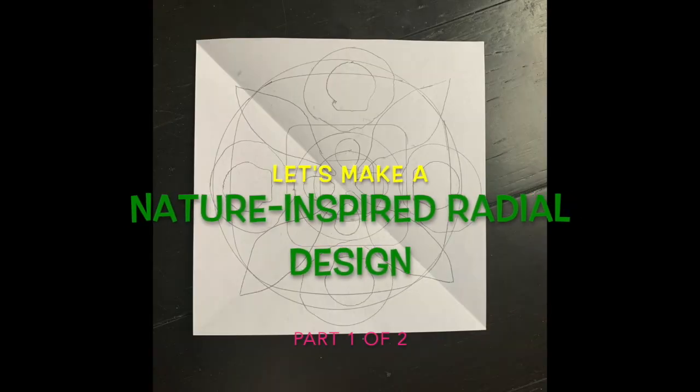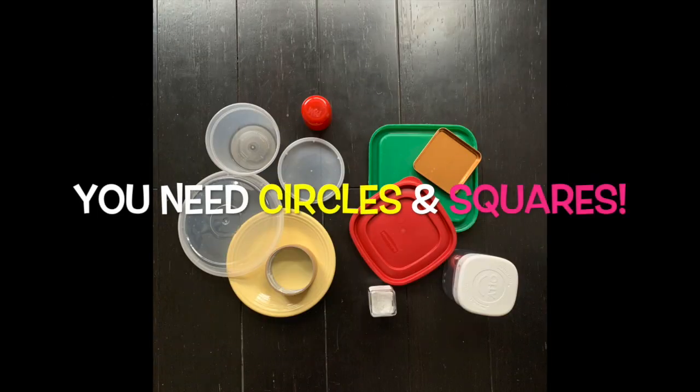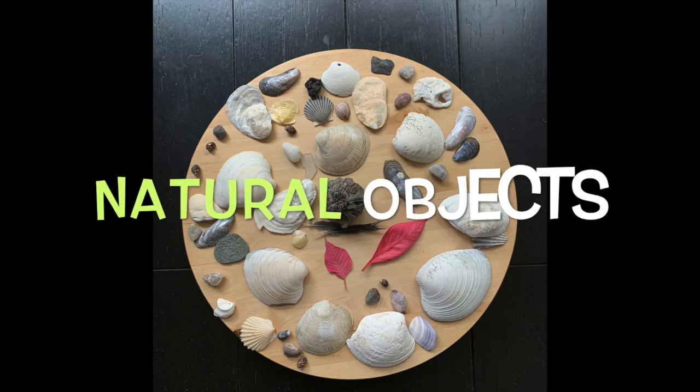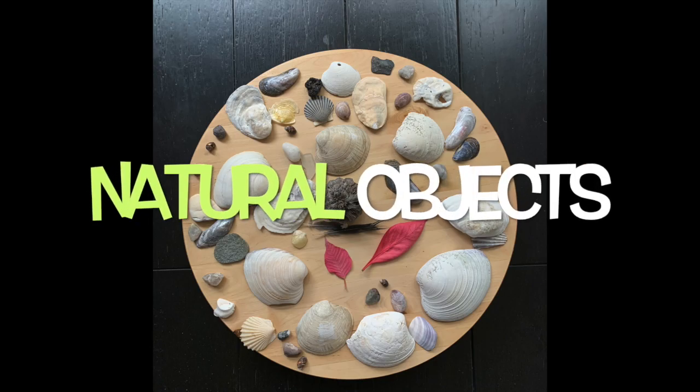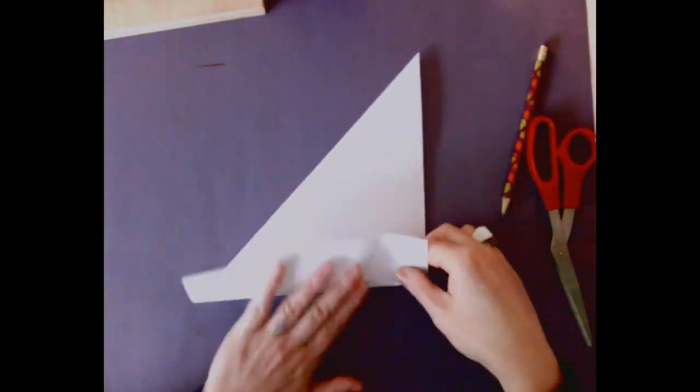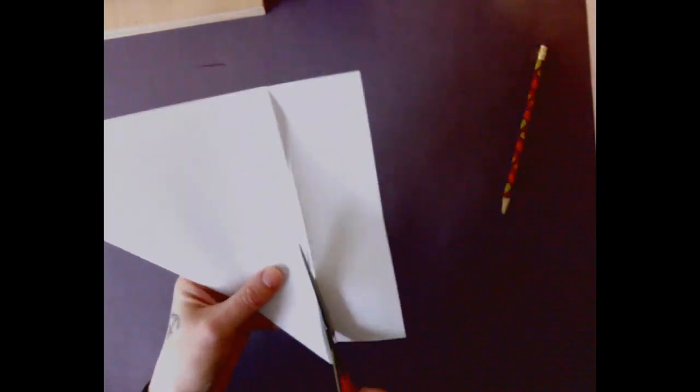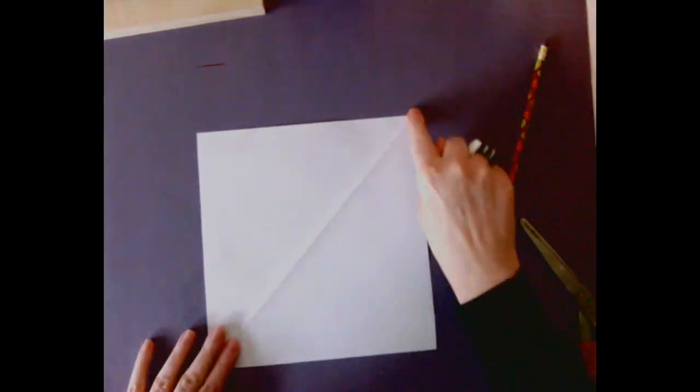One, two, here we go! First you're going to make a square. Create a triangle and fold over the remaining piece. Do it front and back, and then use your scissors to cut it off. You aren't going to need this extra piece.